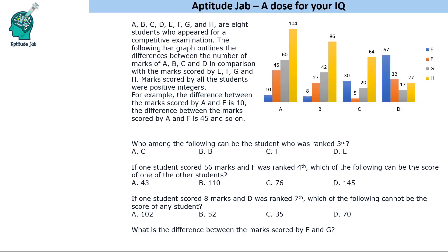Welcome to Aptitude Jab. This is a set based on a bar graph, though it is more of a logical DI set. It says that A, B, C, D, E, F, G, H are eight students who appeared in an examination. The bar graph gives the difference between the marks scored by the first group (A, B, C, D) compared with the second group (E, F, G, H). How to read the graph: the difference between marks scored by A and E is 10, between A and F is 45, and so on. Using this graph we have to find the scores of these people.